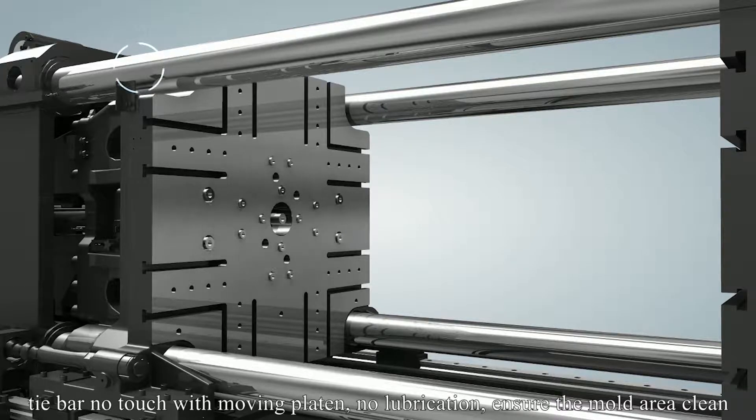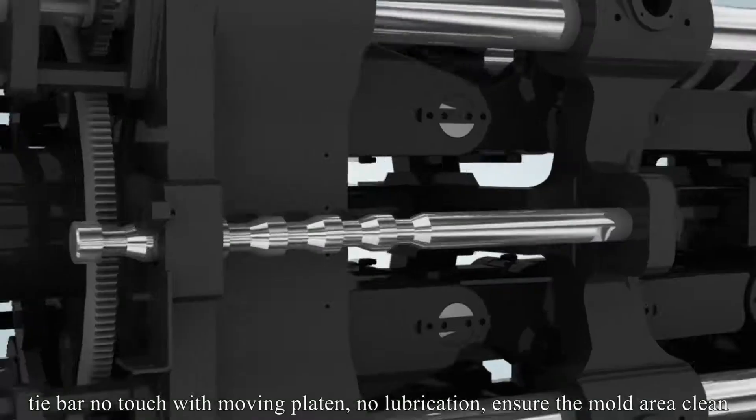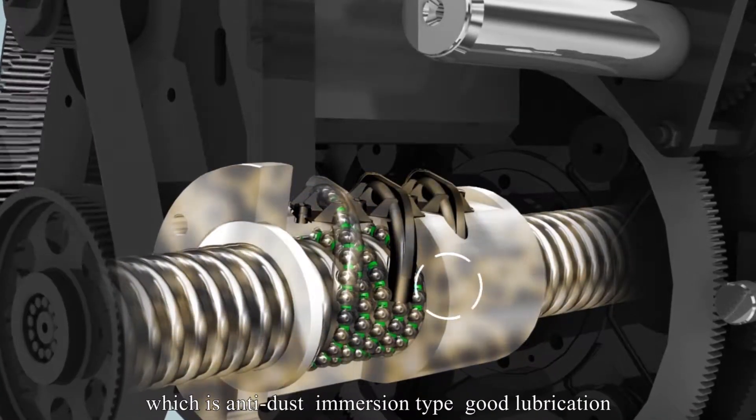Tie bar no touch with moving platen, no lubrication, ensure the mold area clean. Special design for enclosed electric clamping cylinder which is anti-dust.